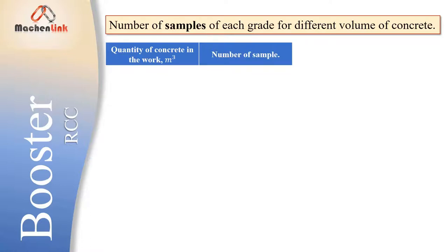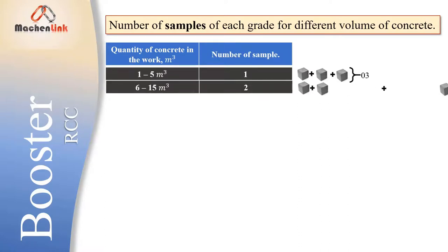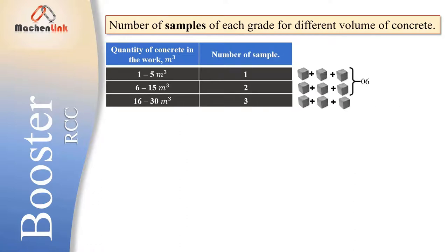If volume of transported concrete is between 1 to 5 m³, then you have to prepare one sample. Between 6 to 15 m³, total 2 samples of 6 specimens. Between 16 to 30 m³, you have to prepare one more sample, for example total 3 samples, 9 specimens.